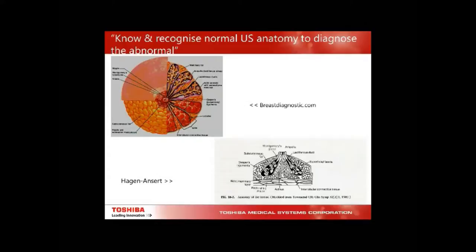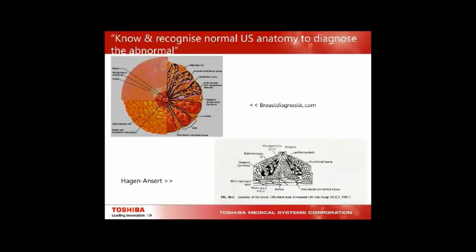You need to know and recognize normal ultrasound anatomy to diagnose the abnormal. With the patient lying on the table, we're seeing a slice of the breast. The breast consists of 15 to 20 lobes with major lobar ducts radiating from the lactiferous sinus underneath the nipple. Each of these ducts has a terminal ductal lobular unit (TDLU), and the number of TDLUs varies in each patient.